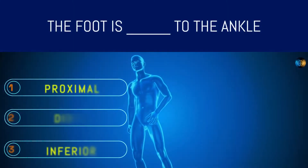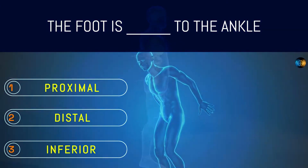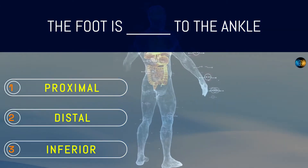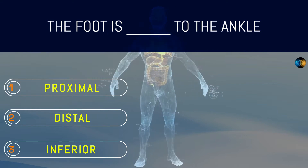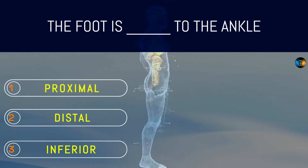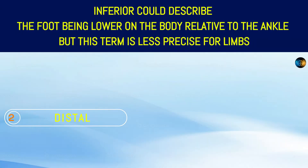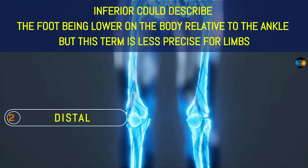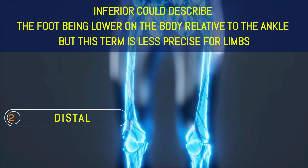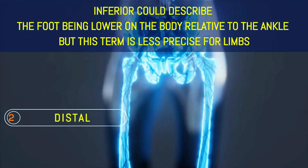The foot is what to the ankle? Proximal, distal, or inferior? Distal. Inferior could describe the foot being lower on the body relative to the ankle, but this term is less precise for limbs.